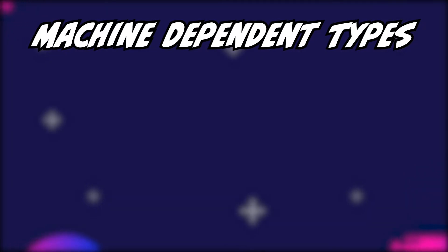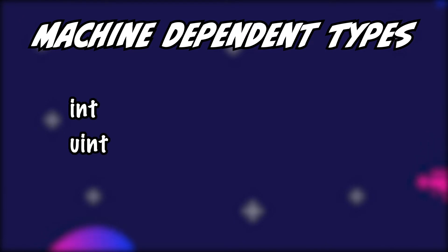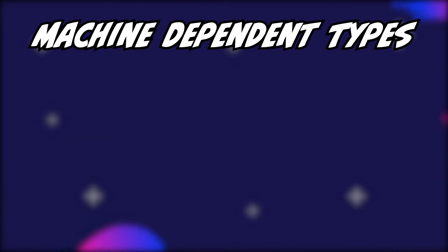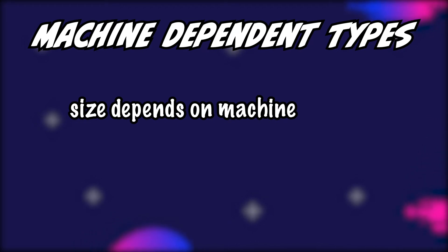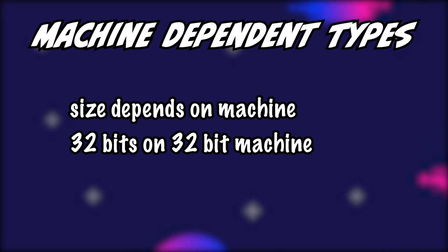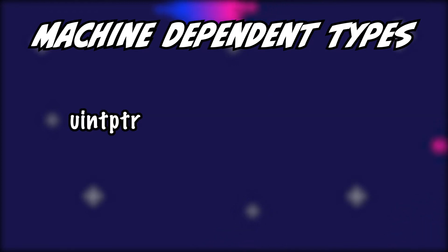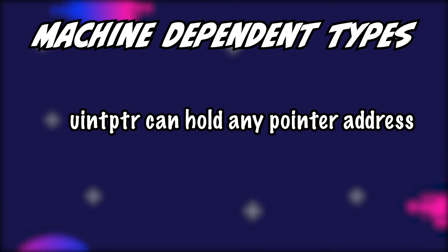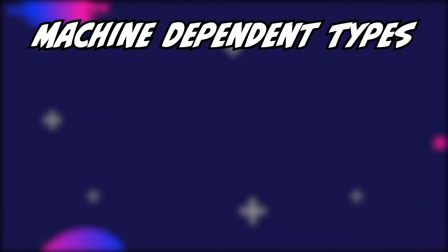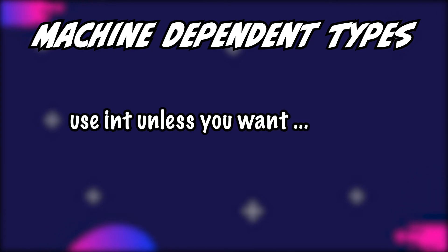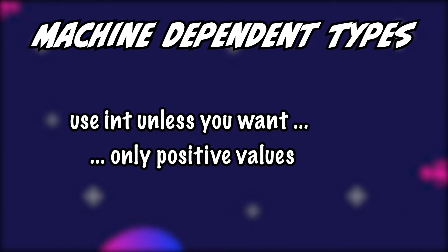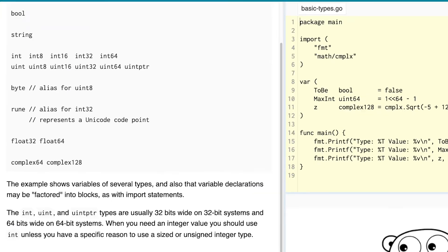There is one more thing to mention: Golang has some machine-dependent types — these are int, uint, and uintptr. Machine-dependent means their size varies depending on your machine. For example, int is 32 bits on a 32-bit machine and 64 bits on a 64-bit machine. The same goes for uint and uintptr. Don't worry about uintptr yet since we haven't talked about pointers. As a general rule of thumb, if you want to store integer values, always use the int type unless you specifically need an unsigned integer or a value of a specific size — that's actually a recommendation from the Tour of Go, so trust Google on that one.